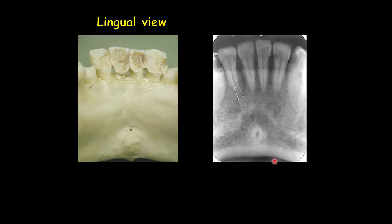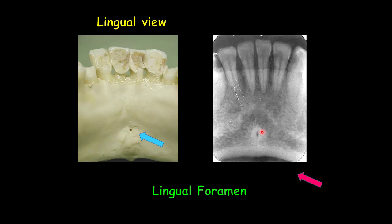Also on the lingual view, you see the lingual foramen. The lingual foramen is located in the same region as the genial tubercles — the neurovascular bundle passes through this foramen. We can have one or even more than one foramen in this region. On the practical radiograph, it is seen as a single round radiolucent area, like a hole in the center of the genial tubercles, right in the midline.